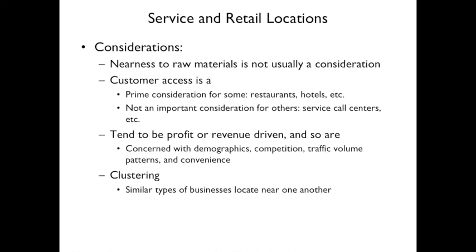There's also clustering, where similar types of businesses locate near one another — with pros and cons. For example, if you're trying to decide between Chipotle and Red Robin, you get in the car and they may be right next to each other. Sometimes being located next to another restaurant means a customer heading there sees yours and switches. Or if there's a line at the other one, they'll come to yours instead.